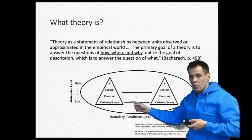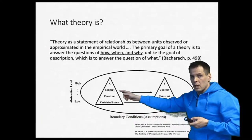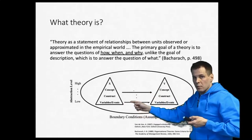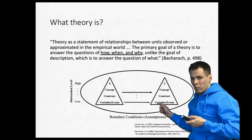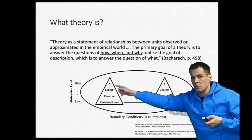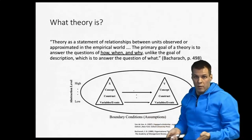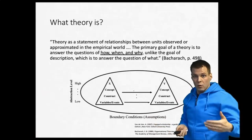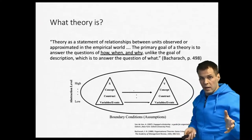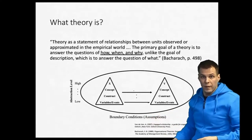Then we have relationships: we make claims about theoretical concepts and their relationships, based on relationships between observable variables. We also have boundary conditions and assumptions required for the theory to hold. For example, a theory about CEO gender causing companies to be more profitable might be constrained to only companies similar to those in Finland.